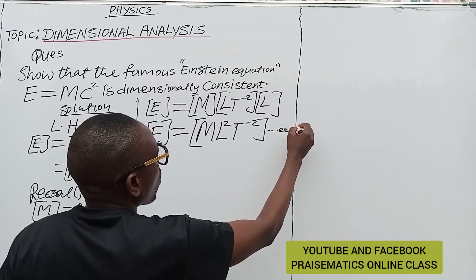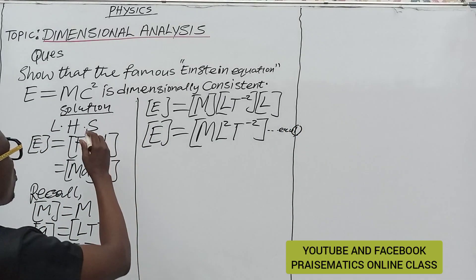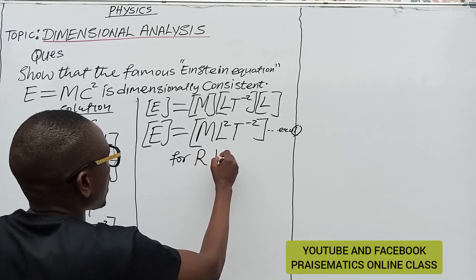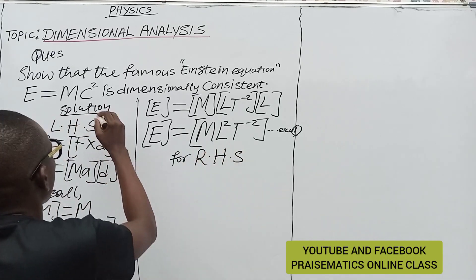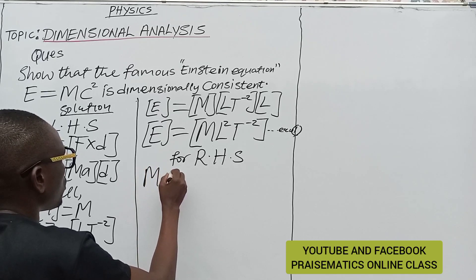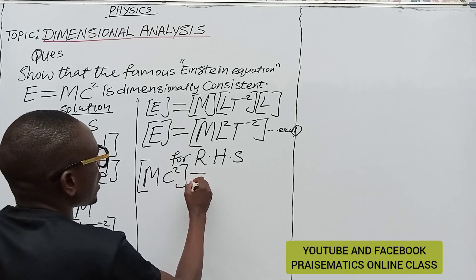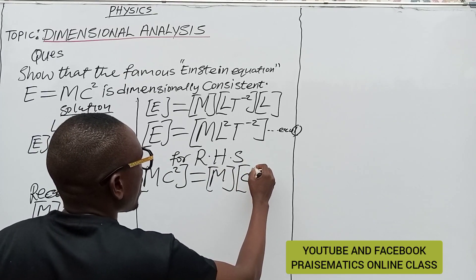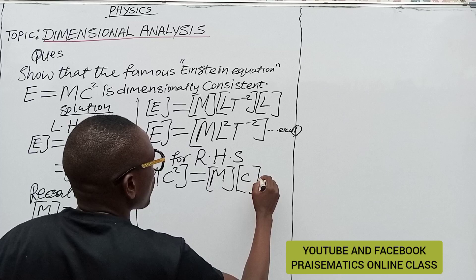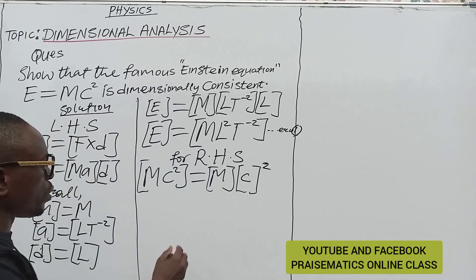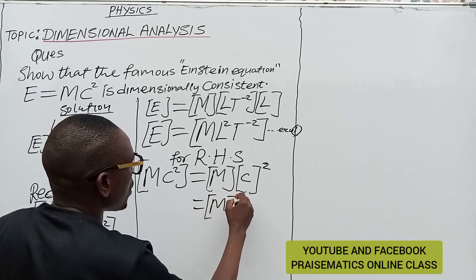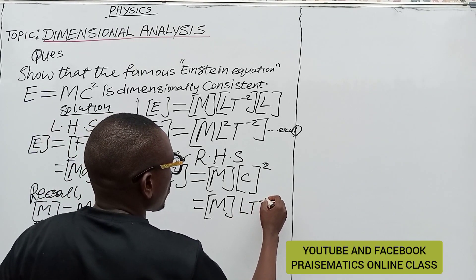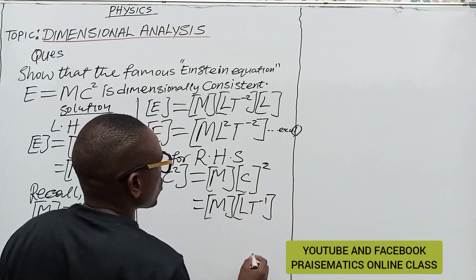Now let's look at the right-hand side, which is mc². The dimension of mc² equals the dimension of m multiplied by the dimension of the velocity of light raised to power 2. So we have the dimension of m multiplied by (LT⁻¹) raised to power 2.